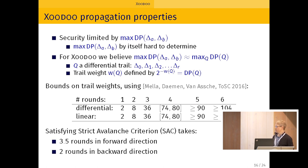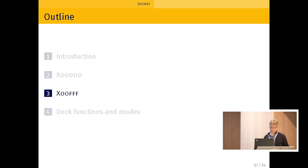So the diffusion is pretty good in terms of the strict avalanche criteria. We need 3.5 rounds in the forward direction to have full diffusion. And in the backward direction, the inverse of theta is heavier, and then we just need two rounds. I think that's it for Zoodoo.